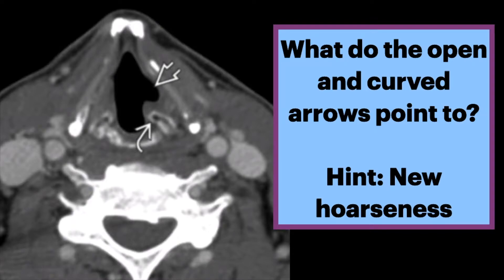In this axial CT, we see slight medial rotation of the left arytenoid cartilage, as indicated by the curved arrow. There is also a prominent dilated left laryngeal ventricle, indicated by the open arrow. This is sometimes referred to as the sail sign, because it mimics the spinnaker of a boat.